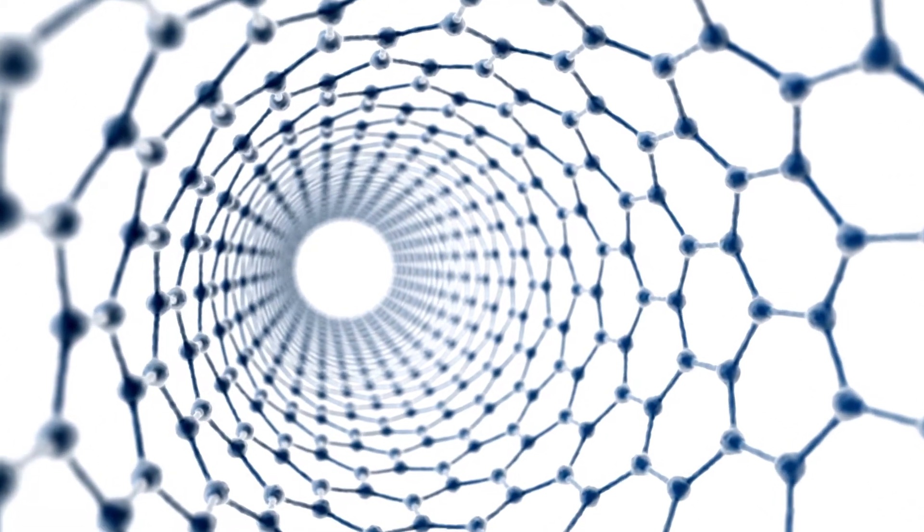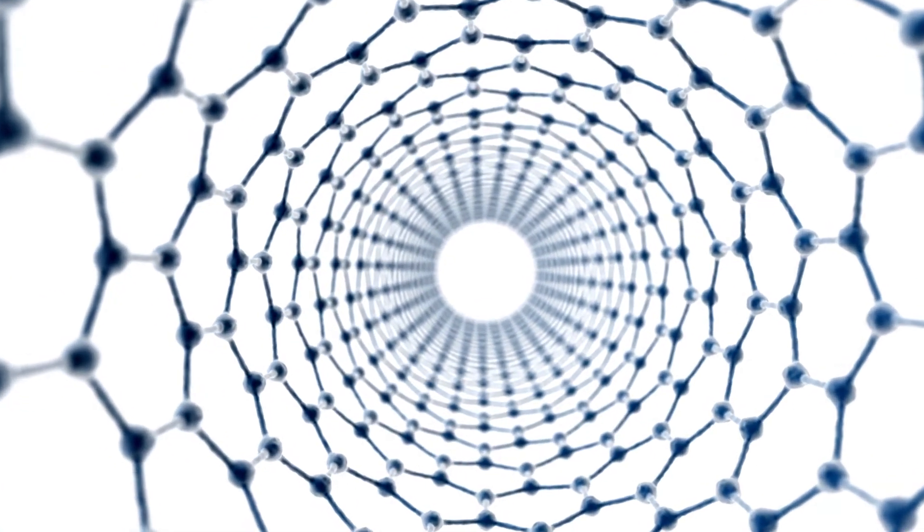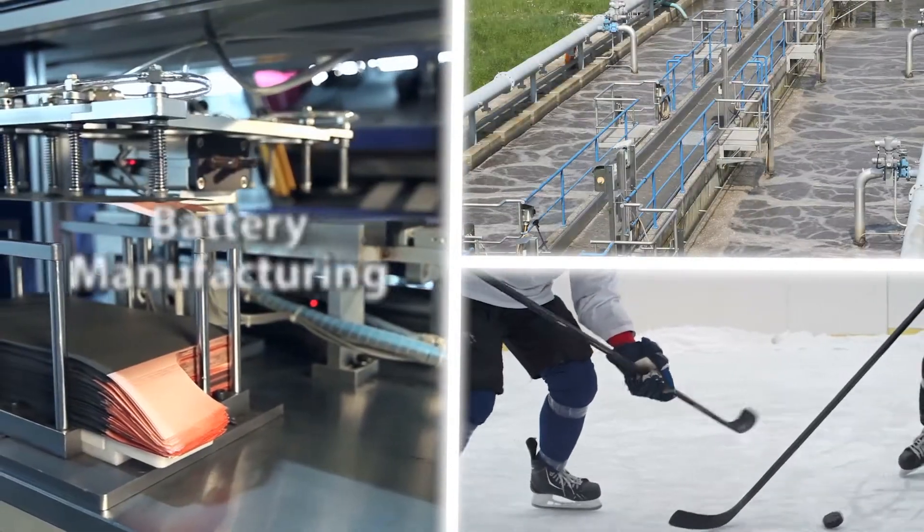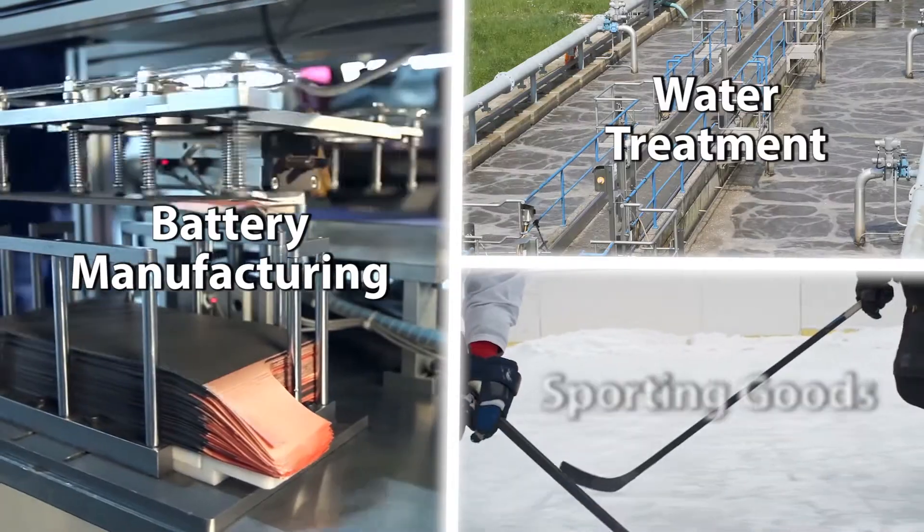Graphene, along with other carbon allotropes such as nanotubes and graphene oxide, are already invigorating industries such as battery manufacturing, water treatment, and sporting goods.